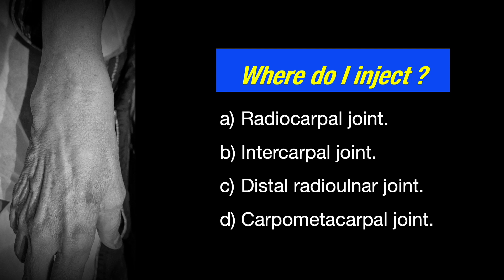Which joint do I inject? This is the first question that comes to my mind when a patient is referred for an intra-articular injection of the wrist. Do I inject the radiocarpal joint, the intercarpal joint, the distal radio-ulnar joint, or the carpometacarpal joint?